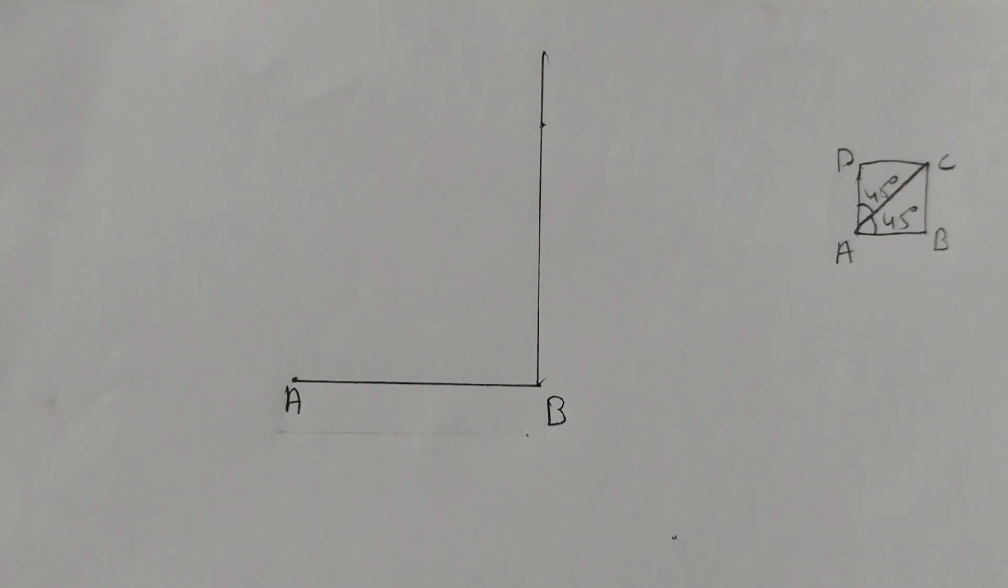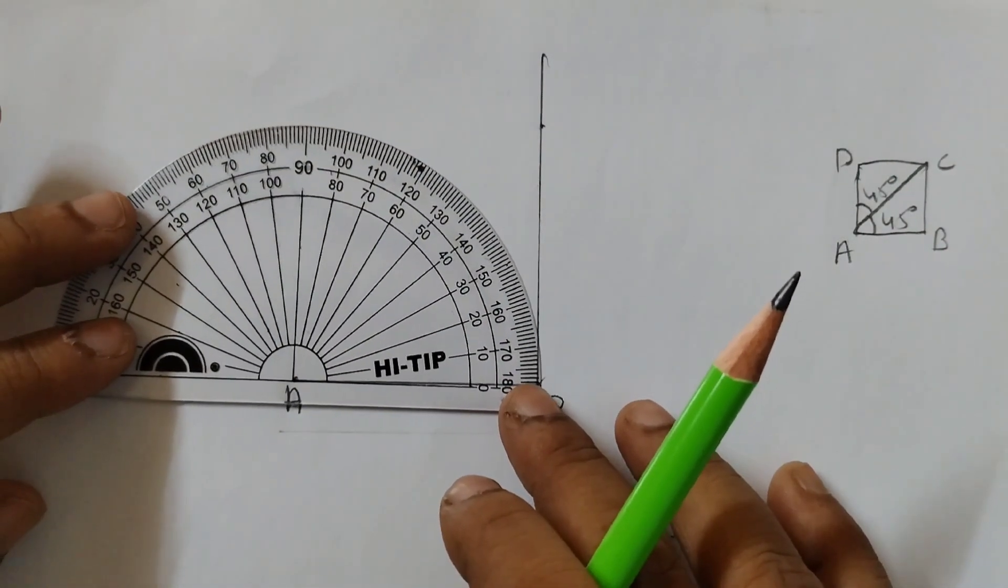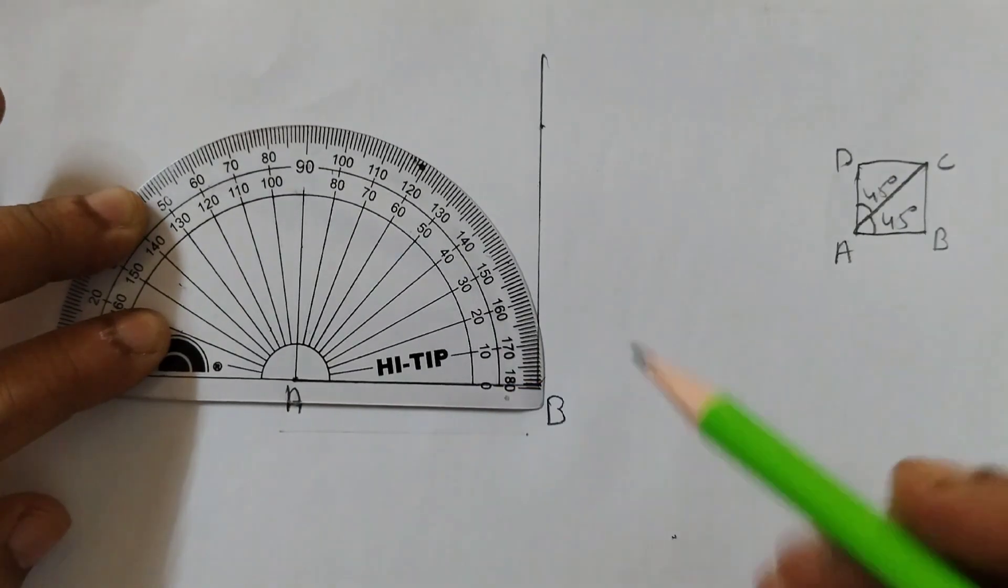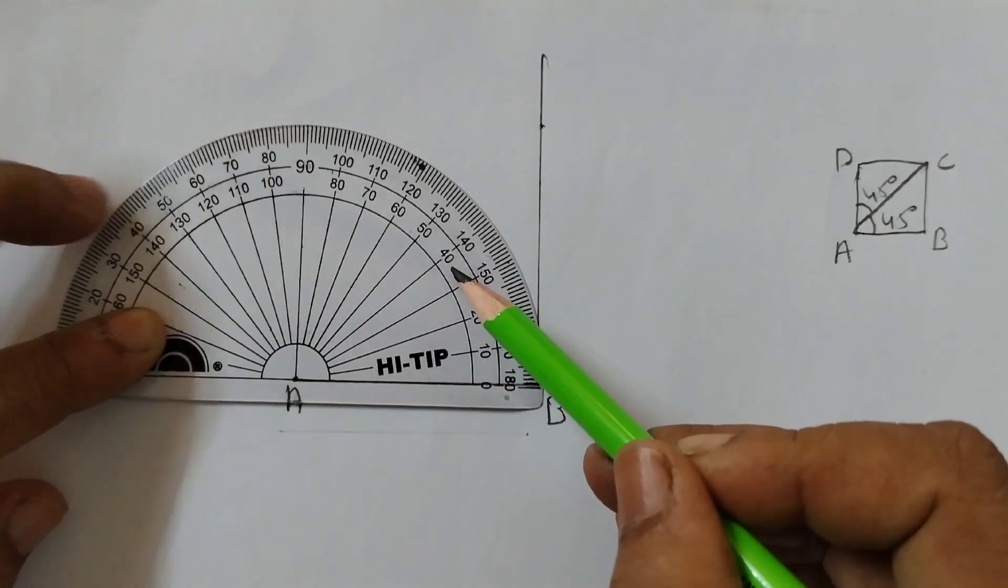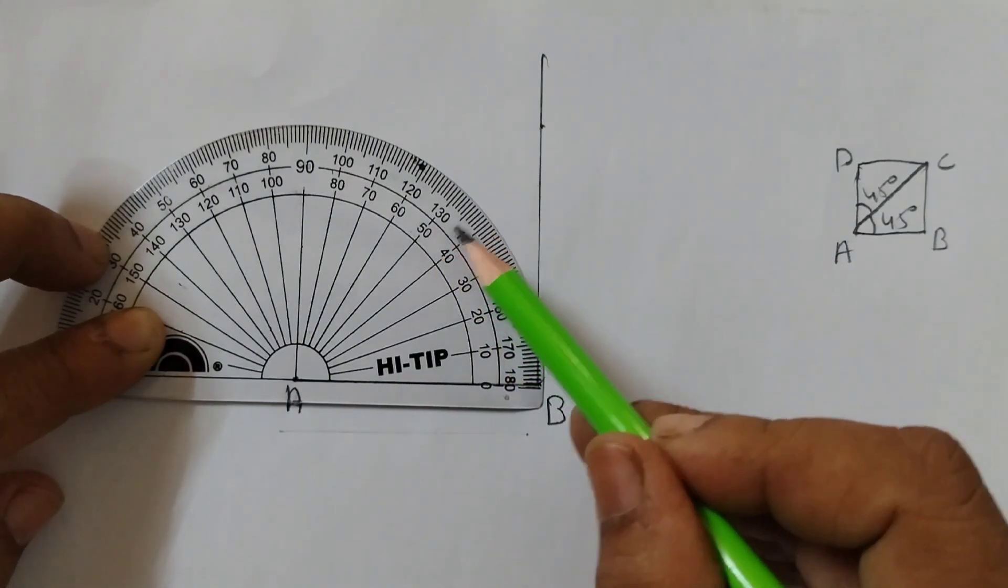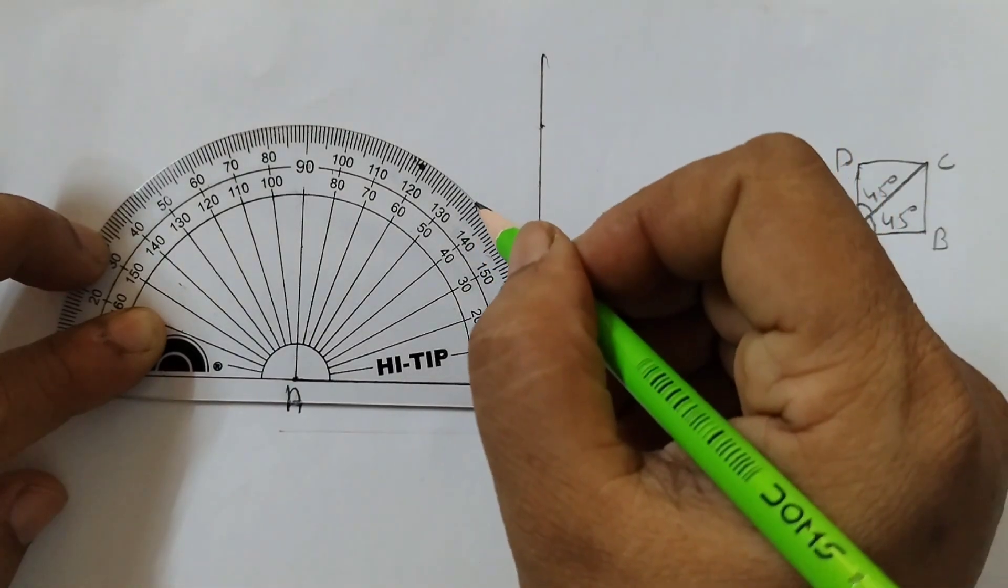Now we will draw a 45 degrees angle at A. Place the protractor like this. Here you can see 40 and 50. In between 40 and 50 there would be a line which is little longer. That will be 45 degrees.